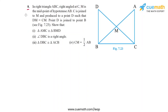In question 8, the problem statement is quite extensive. In right triangle ABC, right-angled at C, M is the midpoint of the hypotenuse AB, so AM and BM are equal. The right-angled vertex C is joined to M, and segment CM is produced to point D such that DM is equal to CM.